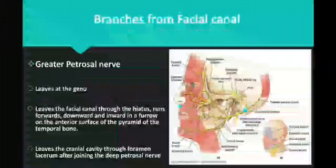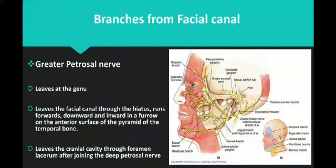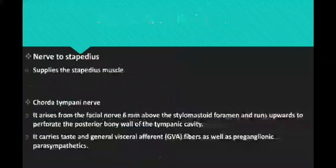The first branch from the facial canal is the greater petrosal nerve. It originates at the junction of the genu, leaves the facial canal through the hiatus, and runs forward, downward, and inward in a furrow on the anterior surface of the pyramid of the temporal bone. It leaves the cranial cavity through the foramen lacerum after joining the deep petrosal nerve.